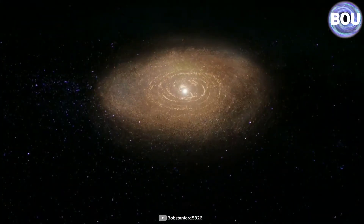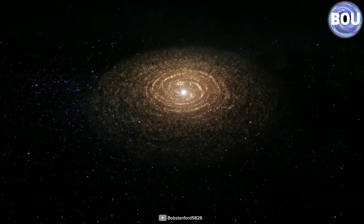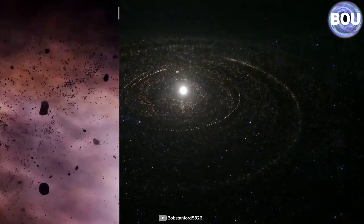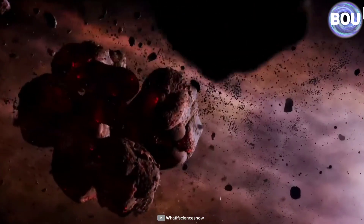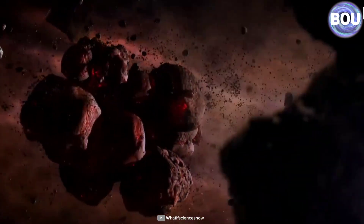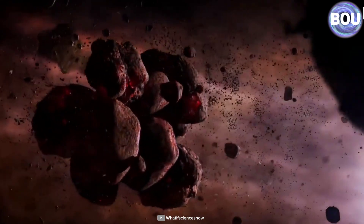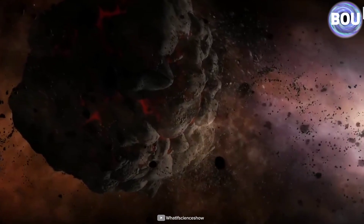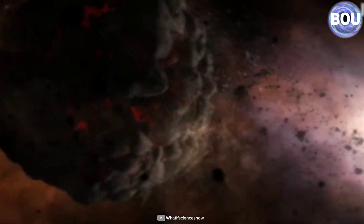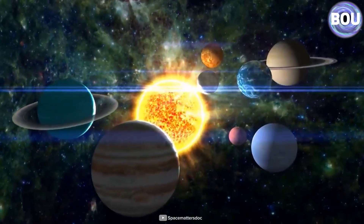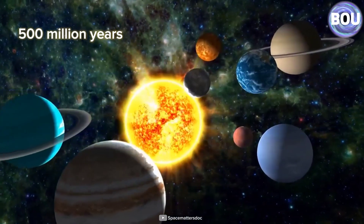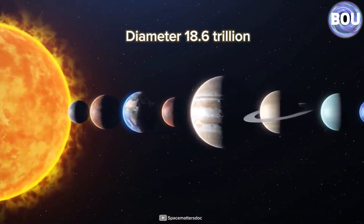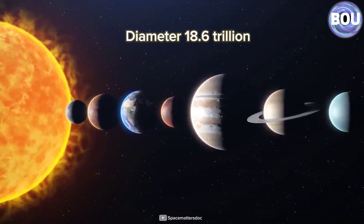Over millions of years, the accumulation of microscopic particles increased, and more dust and gas were drawn towards its center. After millions of years, the first planets emerged, spanning thousands of miles in radius. Our solar system finally took shape after 500 million years, with a diameter of 18.6 trillion miles, and began its own life.